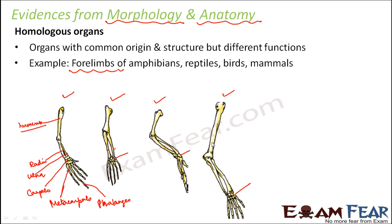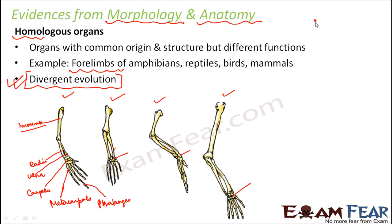So that was about homologous organs. 'Homo' means same, because they have the same origin. These homologous organs represent a type of divergent evolution — the word divergent means that from a common point, different things diversify. The common point here is the common origin, and from that common origin, different functions are being performed. The same structure is present in different organisms but used in different ways.